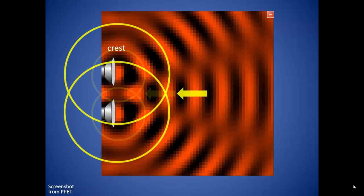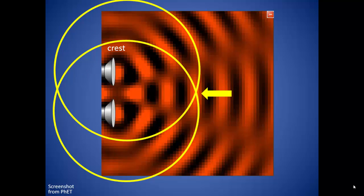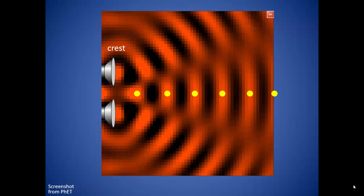The waves run into each other to form what we call a super crest by constructive interference. As the waves move out, they continue to interact, forming another super crest. And another. If we look at all those super crests, we will see that they form a line out from the sources.